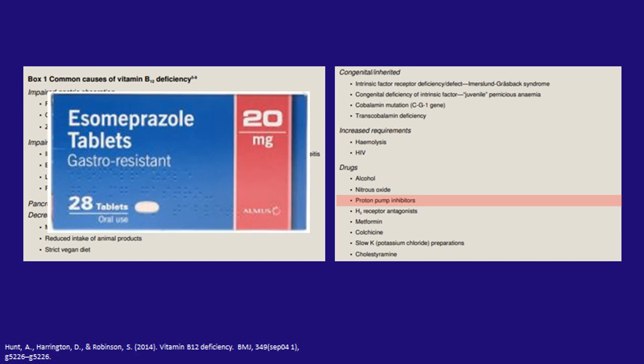Medications that affect the acid in the stomach are also associated with B12 deficiency. Unfortunately, PPIs — which when I was in medical school we were encouraged to prescribe to everybody because they were so safe — cause B12 deficiency, iron deficiency, calcium deficiency, magnesium deficiency, and increase the risk of campylobacter, salmonella, clostridium difficile, and community-acquired pneumonia.